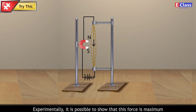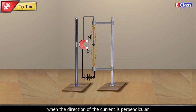Experimentally, it is possible to show that this force is maximum when the direction of the current is perpendicular to the direction of the magnetic field.